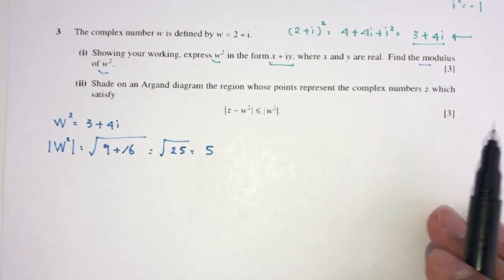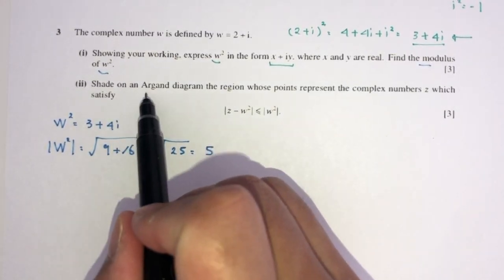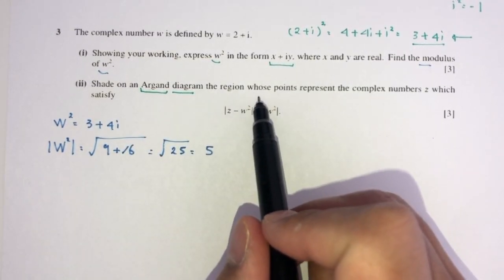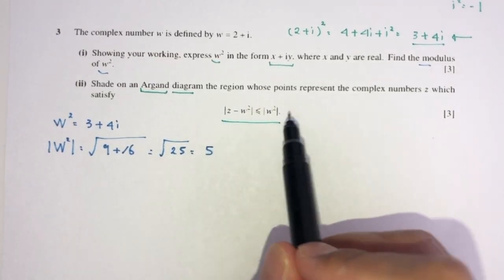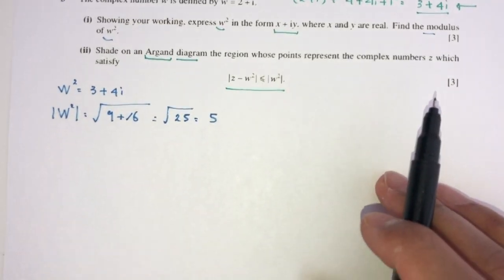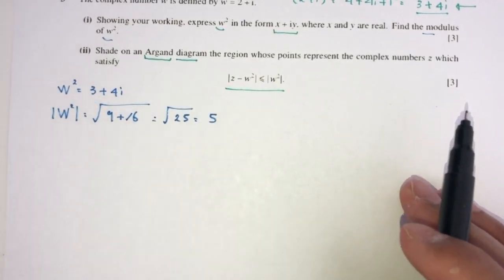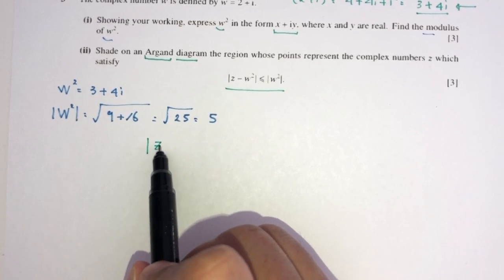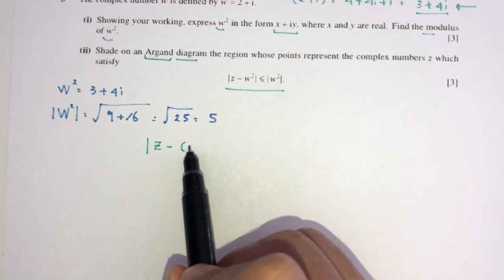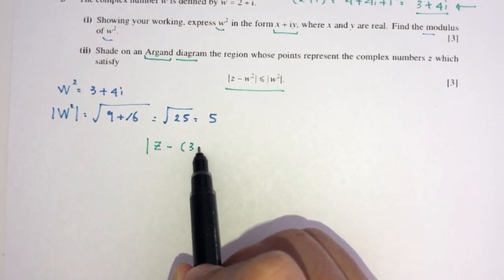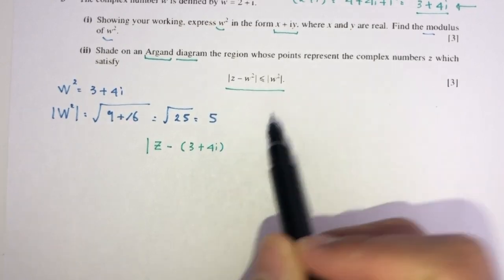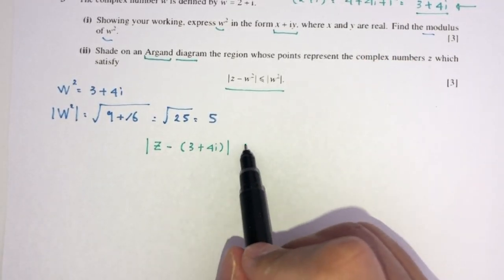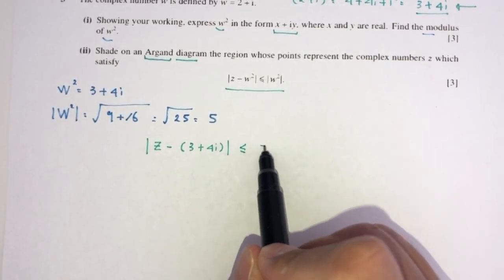Now let's find the modulus of w². Since w² = 3 + 4i, the modulus is √(3² + 4²) = √(9 + 16) = √25 = 5. For part 2, we need to shade the region on an Argand diagram where |z − w²| ≤ 5, which means |z − (3 + 4i)| ≤ 5.